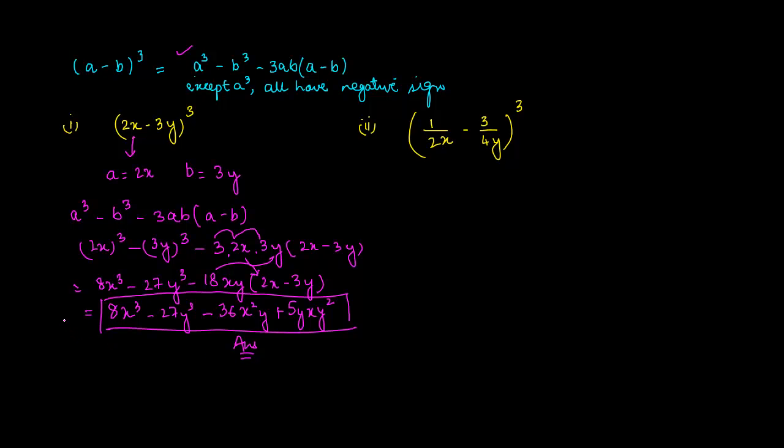Again, just like in the case of a plus b whole cube, I told you that many times you might be given certain particular values. So let's say someone were to give you the value of a cube minus b cube and a minus b, and ask you what is the value of 3ab into a minus b, you can find it out. So these are basically three whole parts.